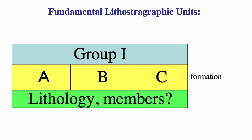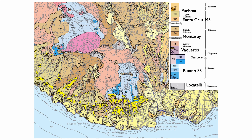Here's a map of California around Santa Cruz, in the north of California. You can see multiple formations: the Purisima, Santa Cruz, Monterey, Vaqueros, and Butanos sandstone. These are formation names, and you can see that we can trace and map those formations very well at the surface, which was really the goal of 19th-century stratigraphy.